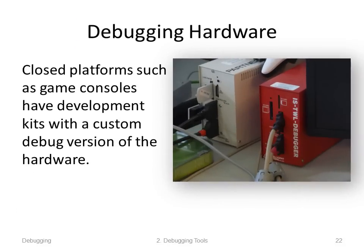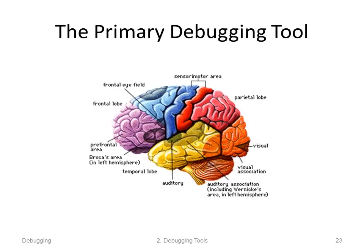There's also specialized debugging hardware available, in particular for closed platforms such as game consoles, which have special development kits with a custom debug version of the hardware. Nonetheless, even though you have all these tools to help you, the most important debugging tool — good coffee — the primary debugging tool, the one you keep in shape by drinking coffee, is your brain. These tools are useless if you don't think.